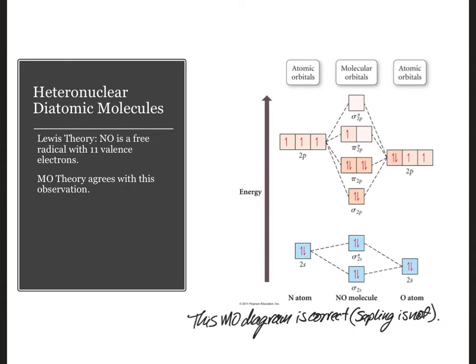Either way, the Lewis structure of NO predicts a radical, unpaired electron, since oxygen brings in six valence electrons and nitrogen brings in five. Regardless of which version of the MO diagram you use, you'll find that molecular orbital theory agrees with the Lewis prediction.